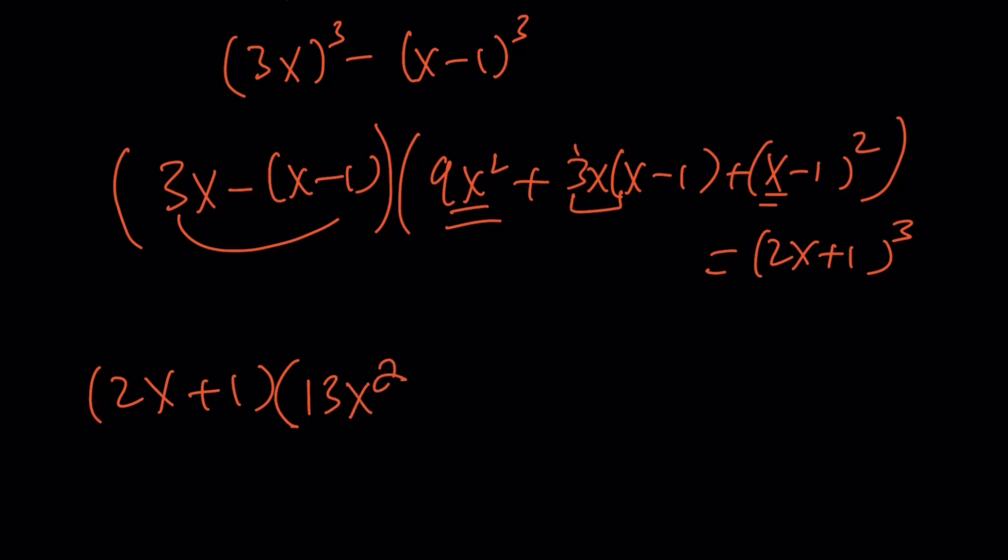Great. And then, we get minus 3x and then minus 2x. That's going to give us minus 5x. And then, what do we get? Any constants? Plus 1, right? And this is equal to (2x plus 1) cubed.